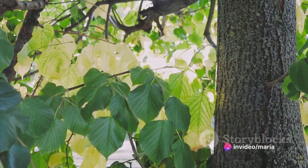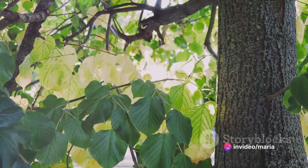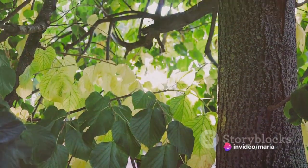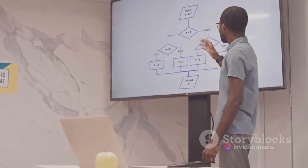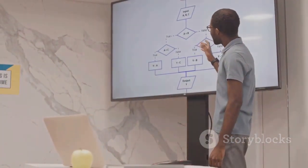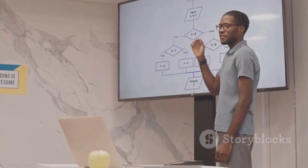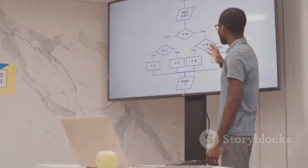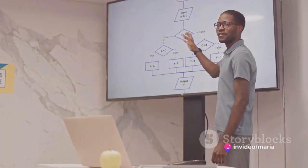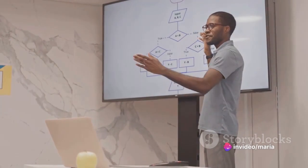Picture a tree, where each fork represents a choice and each leaf represents an outcome. A decision tree is a powerful tool in the machine learning toolbox, used for both classification and regression tasks. Its popularity stems from its interpretability and ability to handle both categorical and numerical features.